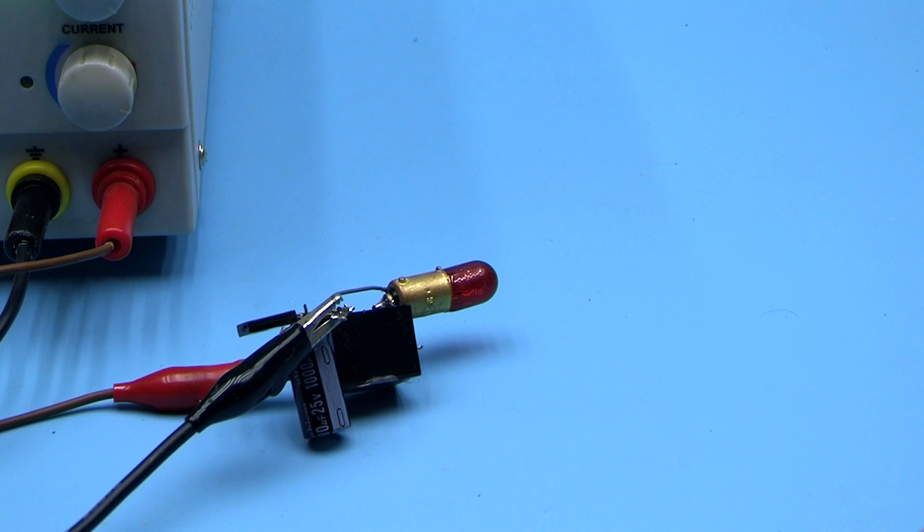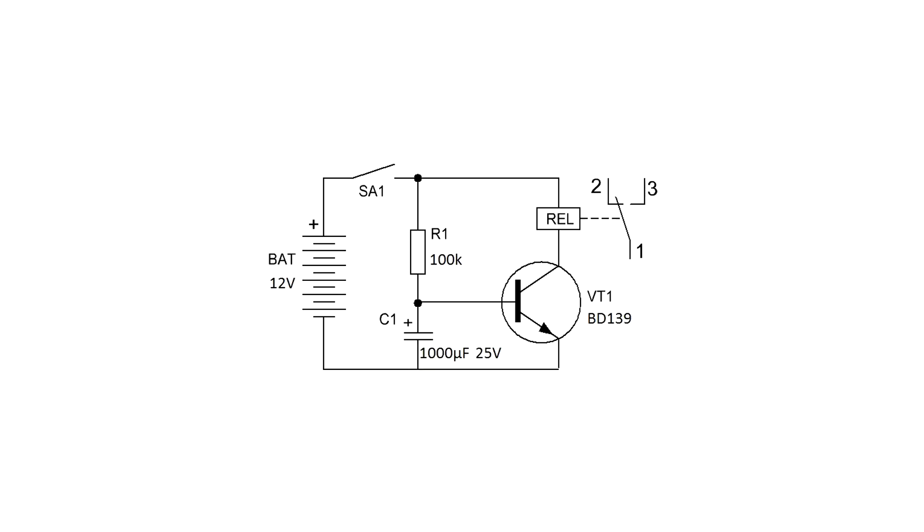When power is applied to the circuit, the relay doesn't turn on immediately, but after some time has passed. Initially, the capacitor is slowly charging through the limiting resistor. As soon as the voltage on the capacitor reaches a certain value, somewhere 0.6 to 0.7 volts, the transistor is triggered. Through its open transition, power is supplied to the coil, the relay is activated and switches the load.